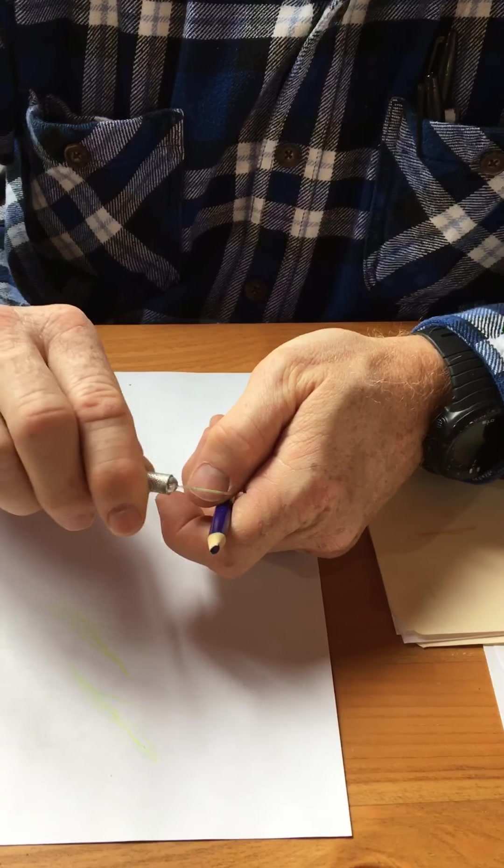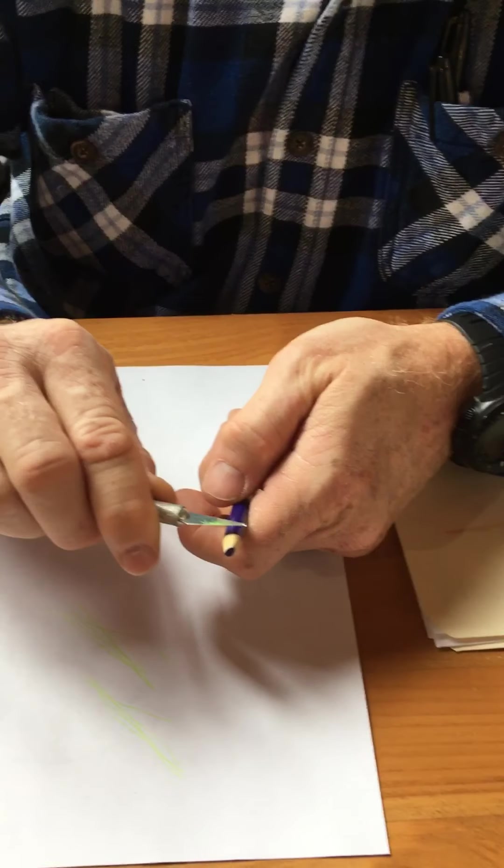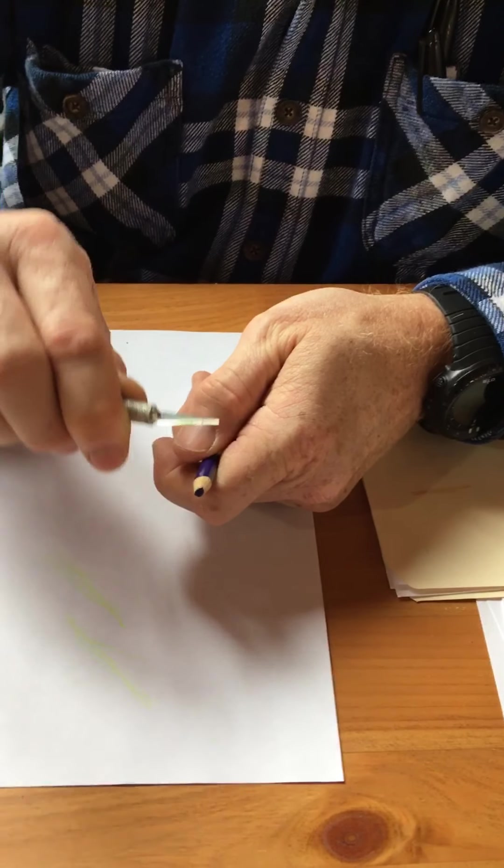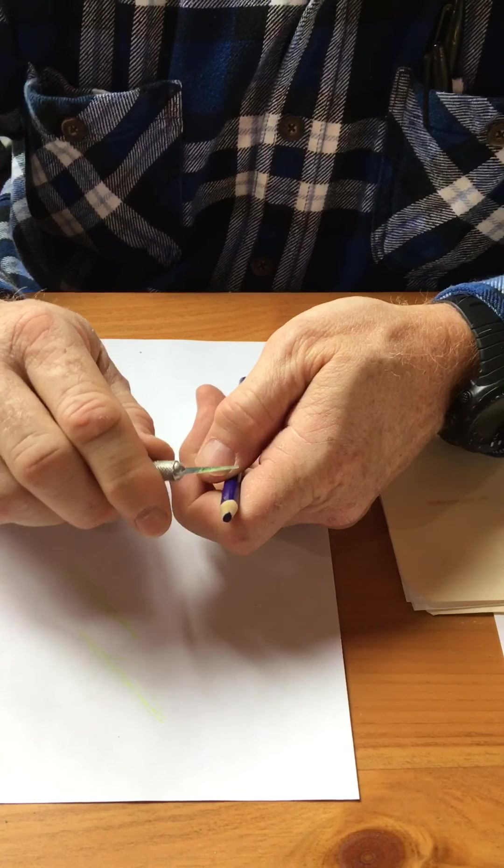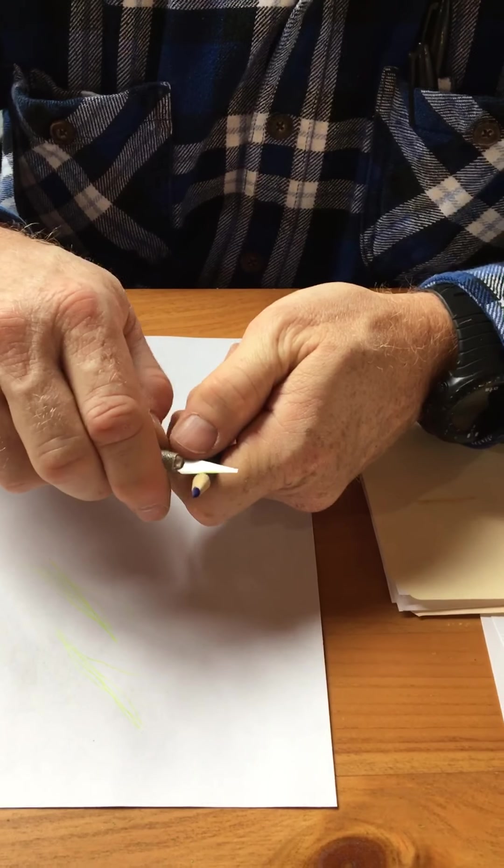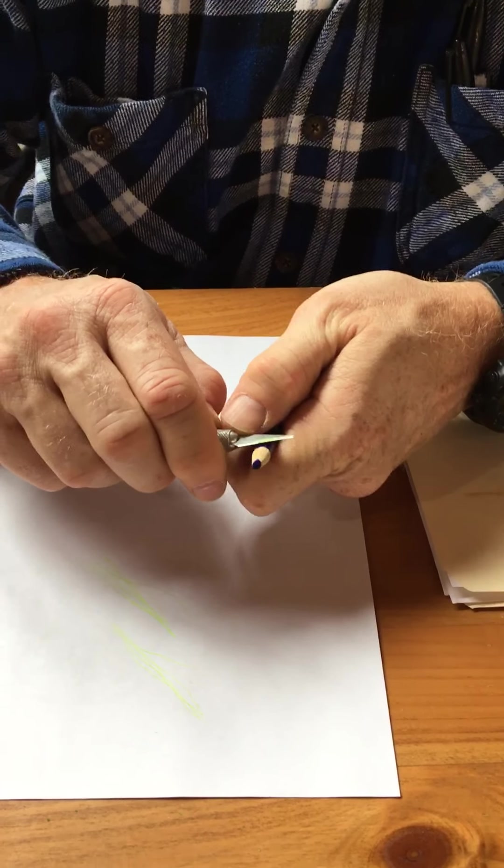This hand is simply going to hold the exacto knife or whatever blade you have and simply turn it down or up. It'll control the depth. So the way this is going to work, I'm going to turn this pencil as we do it, so I'm going to push the blade with my thumb. And this does take a little bit of practice.